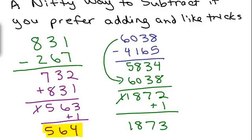I think I'll put that in the blue color here. So that was the original problem. And that, my friends, is the answer. So 6038 minus 4165 is 1873.